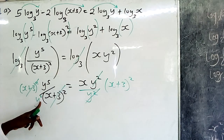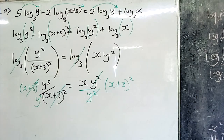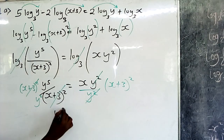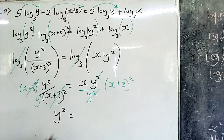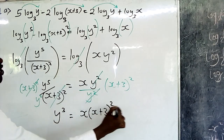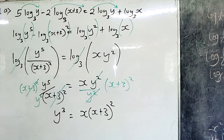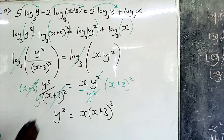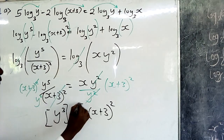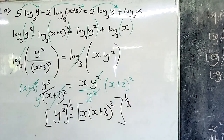We are left with y⁵ divided by y², and since they have the same base we subtract the powers, giving y³ equals x(x+3)². To make y the subject, we get rid of the power 3 by raising both sides to the power of one-third. Three times one-third leaves us with just y.